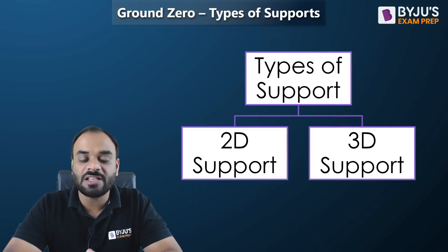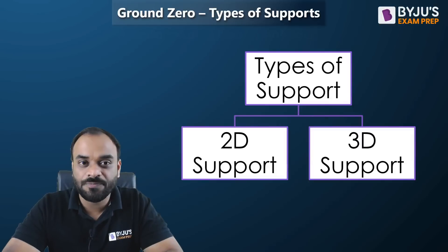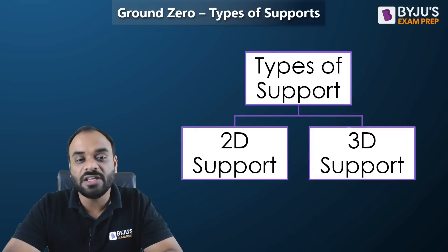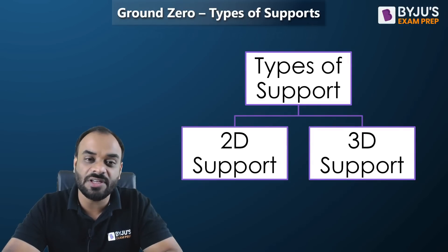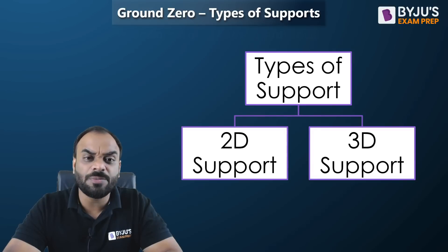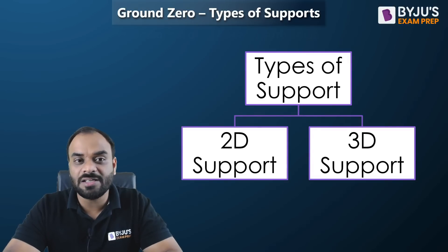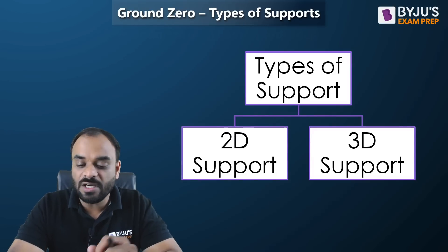Today I will explain the various types of 2D supports and also the supports used in 3D conditions. In civil engineering, as well as in GATE and ESE examinations, we primarily use 2D supports for analysis. However, 3D supports are also useful for finding the static indeterminacy of 3D structures, and questions from this part may appear in examinations.